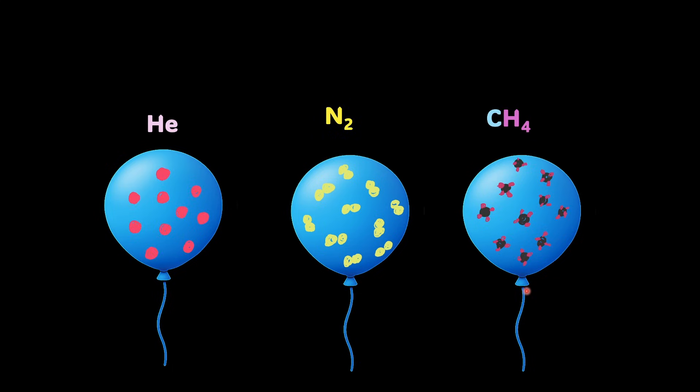But Avogadro's law tells us otherwise. All three balloons contain the same number of gas molecules, regardless of their mass or size. Because the volume of a gas is directly proportional to the number of molecules, not their size or type. This was a turning point in how we understood gases. For the first time, scientists had a molecular explanation for Gay-Lussac's volume ratios.